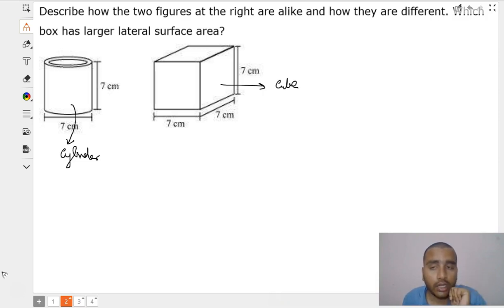Now, the next thing is how they are alike? We can see what is the height of cylinder. Height of cylinder is equal to 7 centimeter. And similarly, what is height of cube? That is also 7 centimeter.